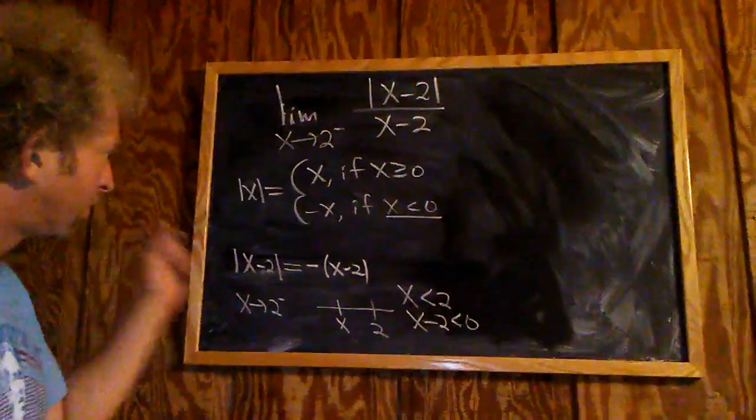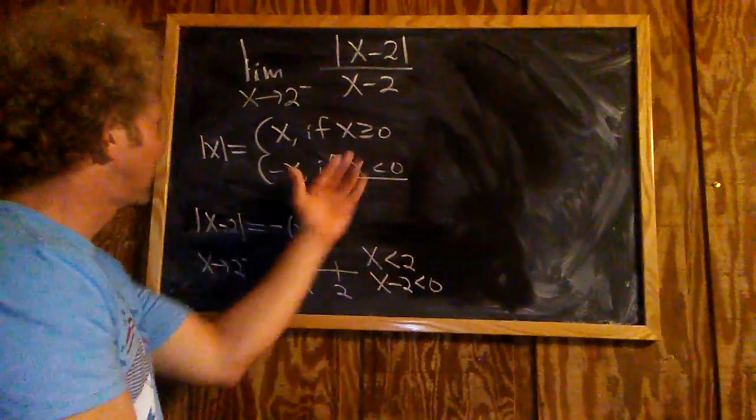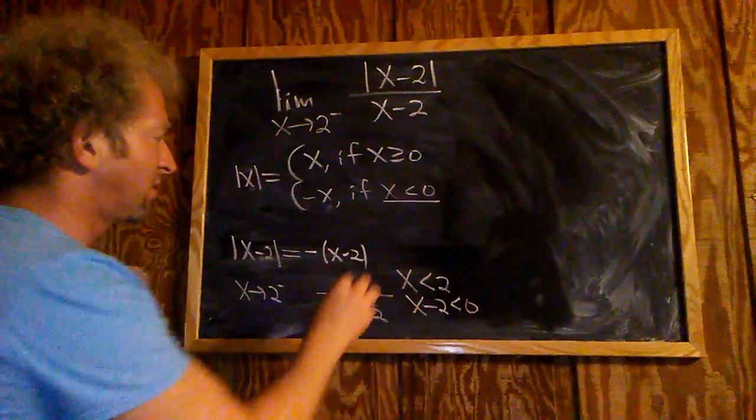So again, our x here is x minus 2. It's less than 0, so you plug in x minus 2 into the formula. This is equal to that. So now the limit equals the limit as x approaches 2 from the left.